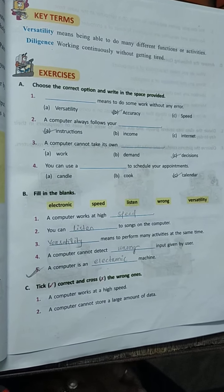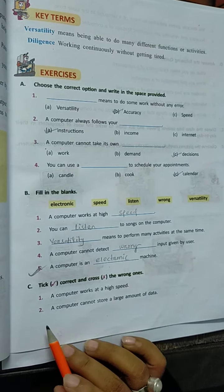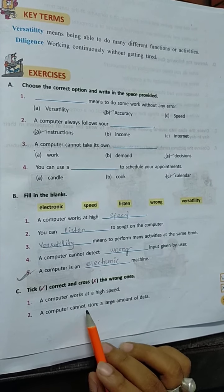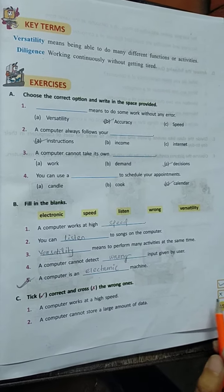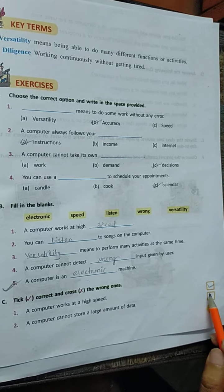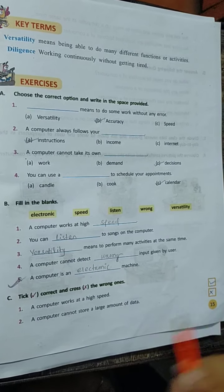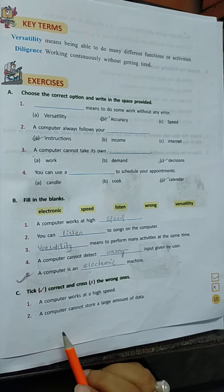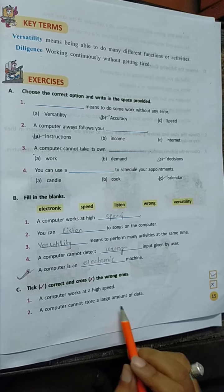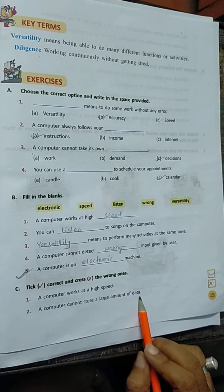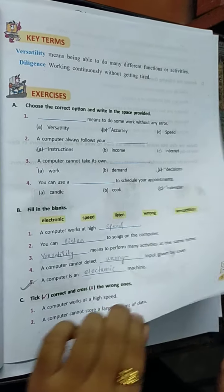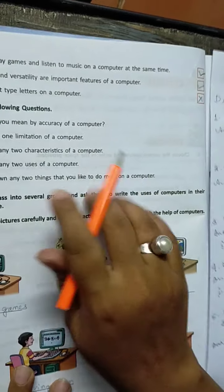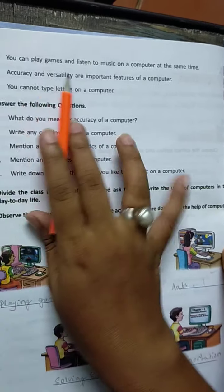The first statement is: 'A computer works at a high speed.' This statement is correct, so you should put a tick here. The second statement is: 'A computer cannot store a large amount of data.' This statement is false, so you should put a cross here.